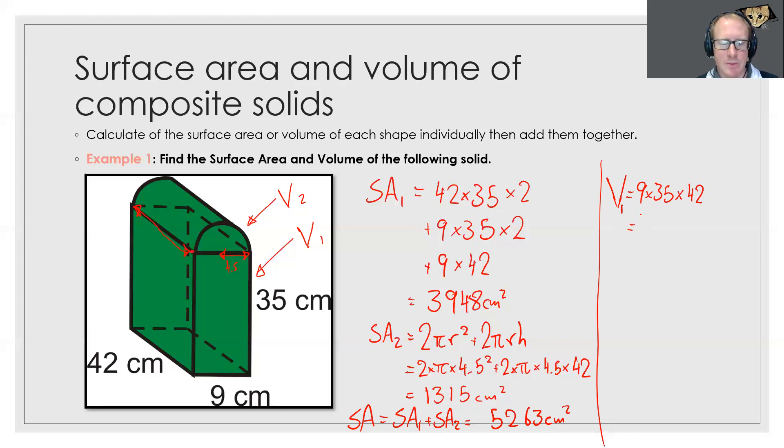We're really just timesing the numbers all together when we do rectangular prisms, which we get 13,230 centimeters cubed. Our volume 2, well that's a cylinder πr² times height, but we've only got half of the cylinder so we'll stick a little half out the front.